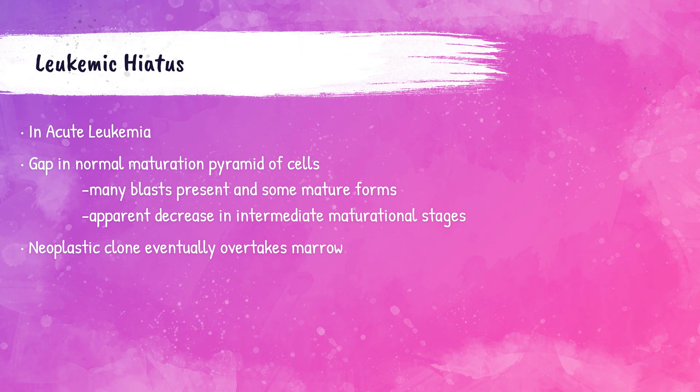Leukemic hiatus is a gap in the development of cells — there are many blasts, which are the most immature form, and then many mature cells, but a lack of intermediate maturational stages from blast to mature cell. A good analogy: imagine a five-year-old child who suddenly appears 60 years old — no intermediate stage, just super immature and then super mature.